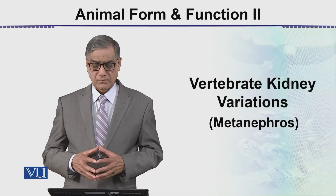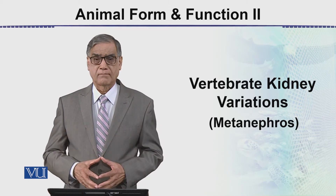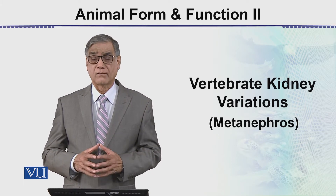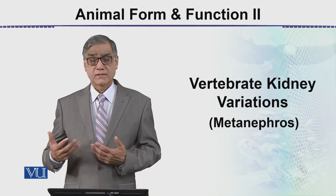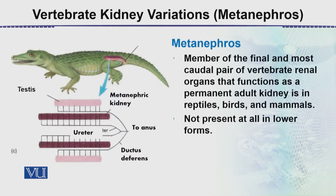In this lecture we will be discussing the vertebrate kidney, specifically the metanephros, which is the ultimate form of kidney development. It occurs in reptiles, advanced reptiles, birds, and mammals. The metanephros is the final and most caudal pair of the vertebrate kidney, and functions as a permanent adult kidney in reptiles, birds, and mammals. It is not present in the lower vertebrates.